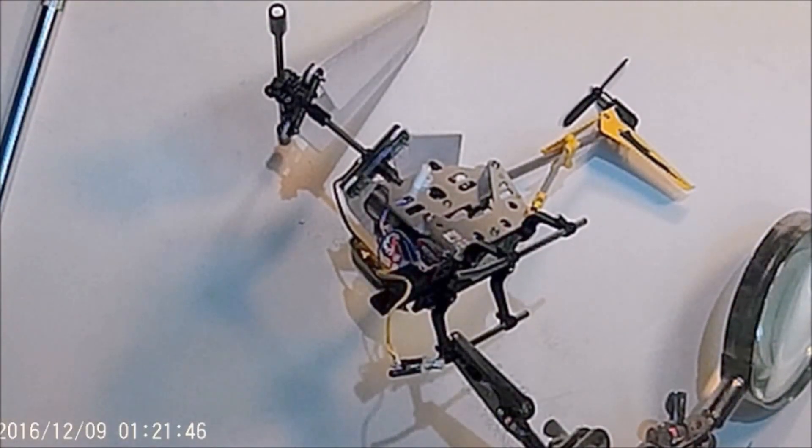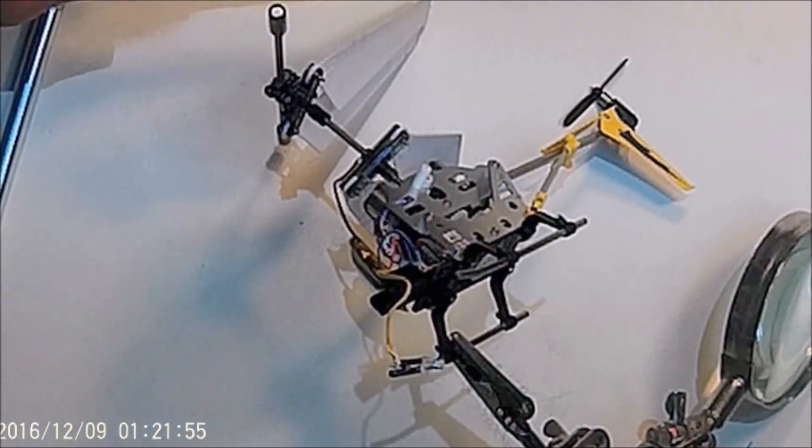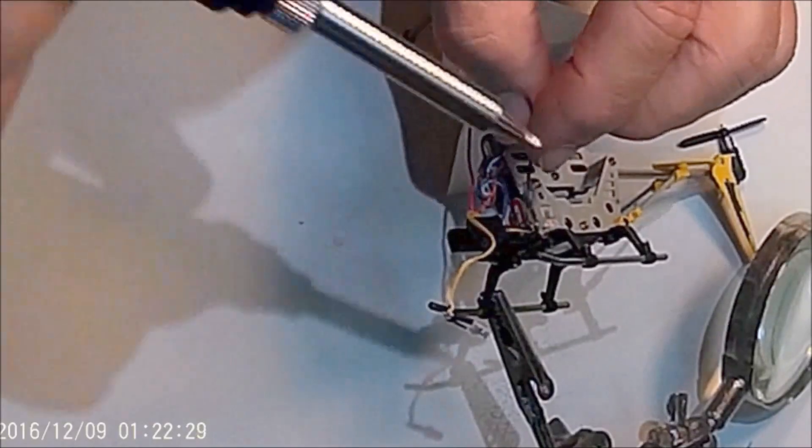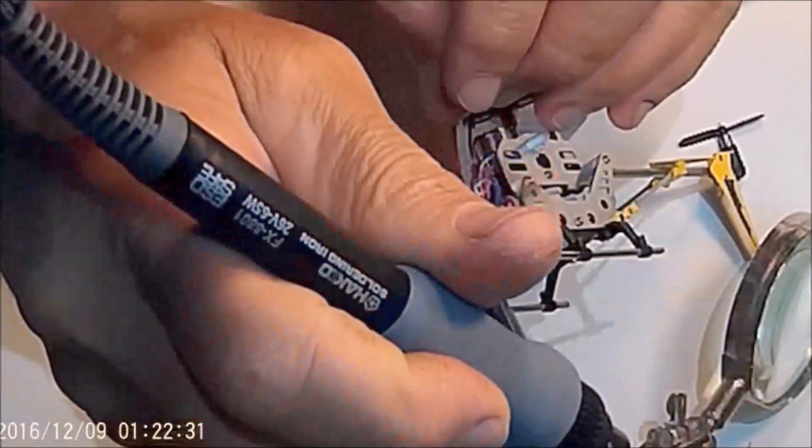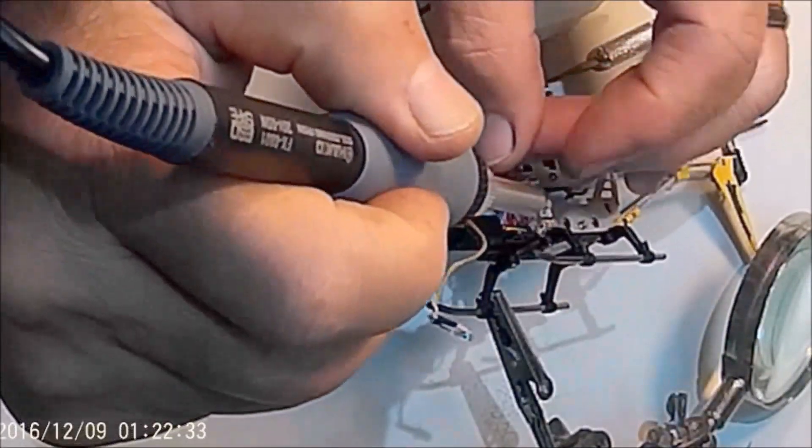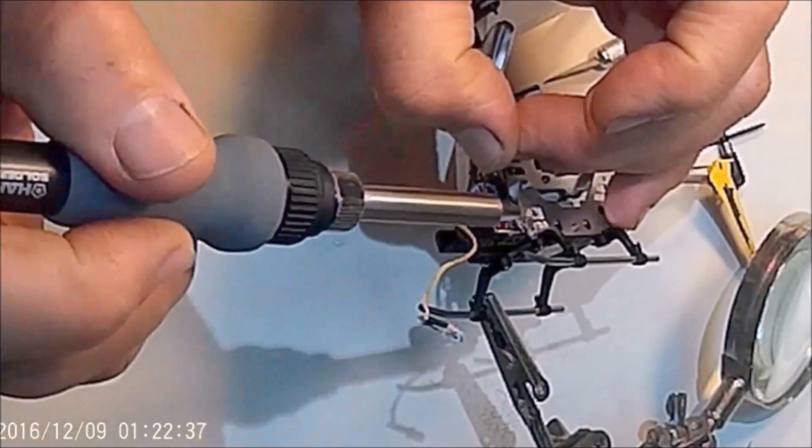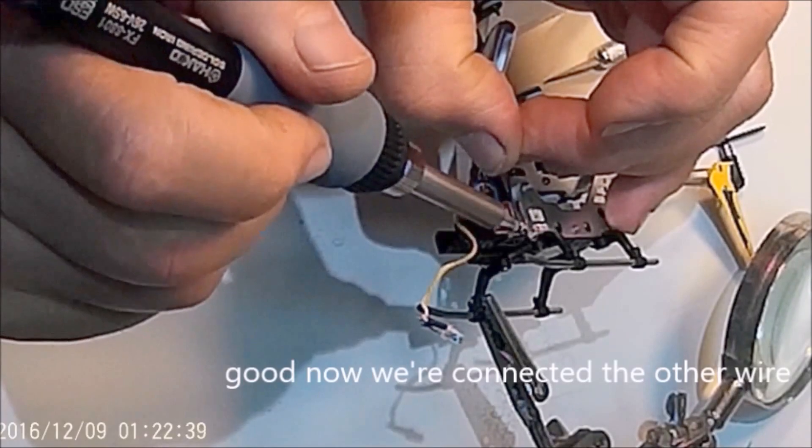Okay, let's go ahead and solder the black wire. I've got my iron. I'm going to melt a little bit of the solder on the tip of it. Now you've got to be a little bit careful. This yellow wire is very close to where I've got to make this connection, so I don't want to burn off the insulation and then create a short.